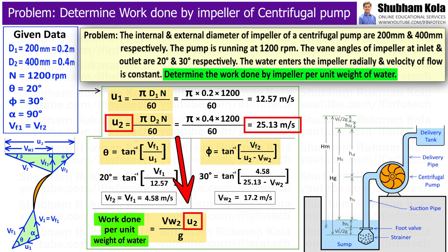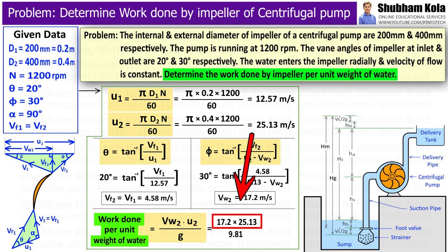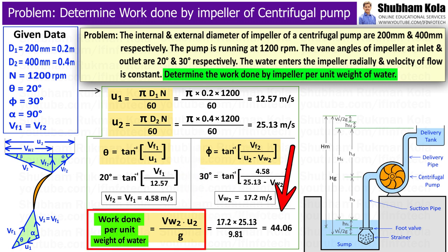Now we have the values of Vw2 and U2, so I substitute these values in work done formula, and we will get work done by impeller per unit weight of water equal to 44.06.